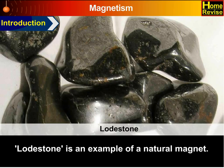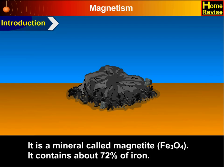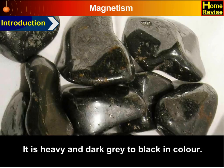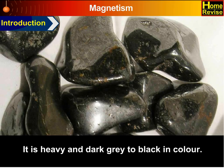Lodestone is an example of a natural magnet. It is a mineral called magnetite, Fe3O4. It contains about 72% of iron. It is heavy and dark grey to black in colour.